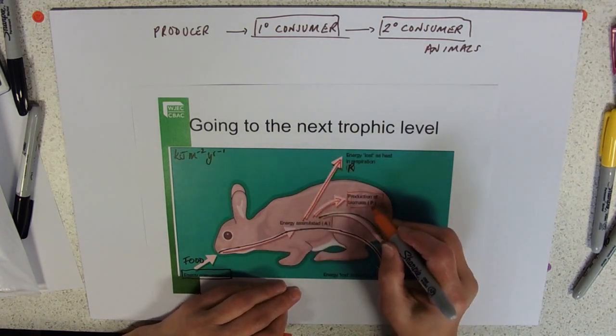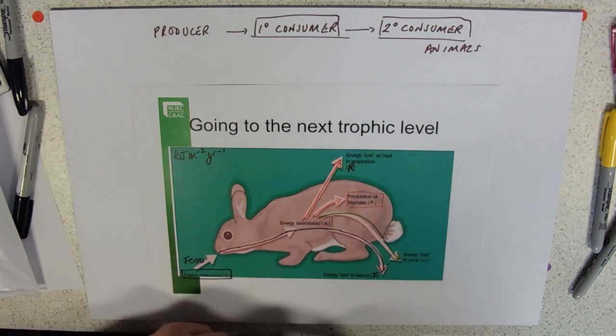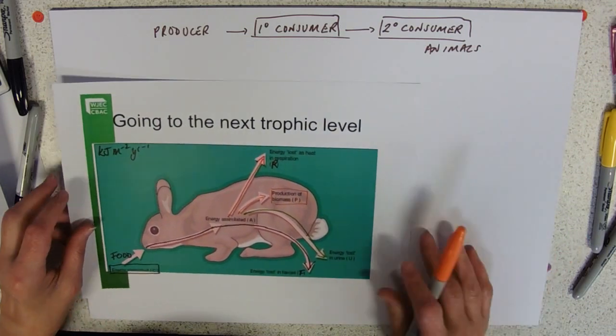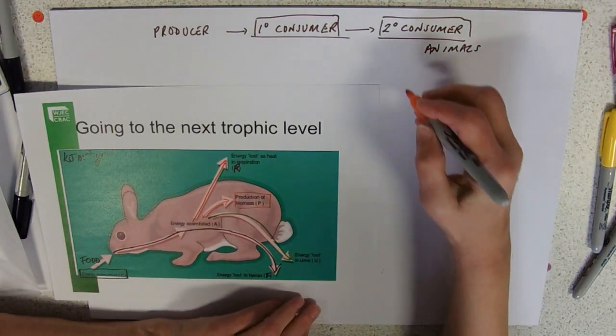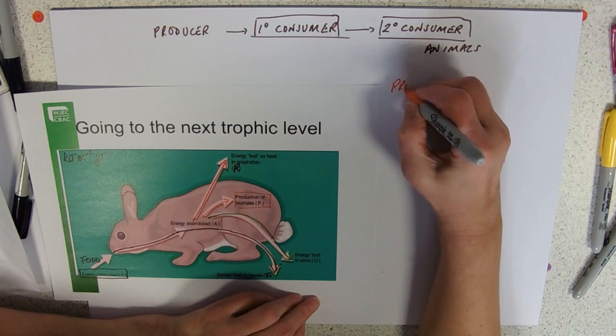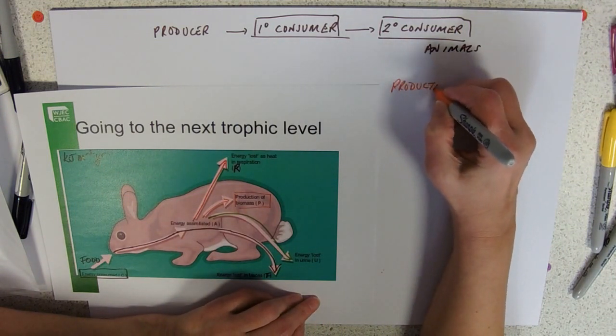We can work out the production of an animal if we know some of these numbers. In this case, we're trying to work out production of this rabbit.